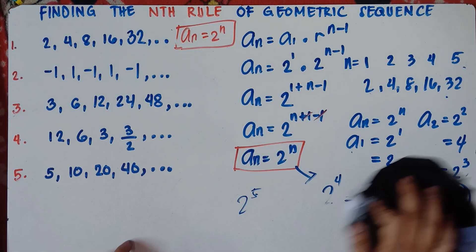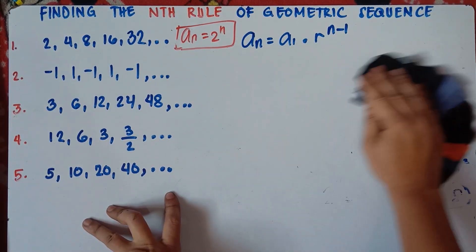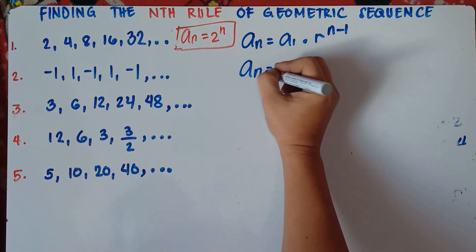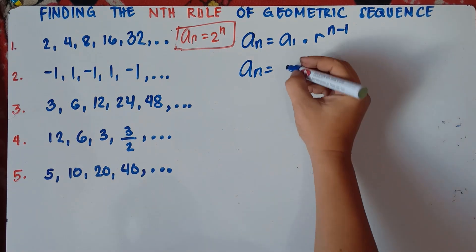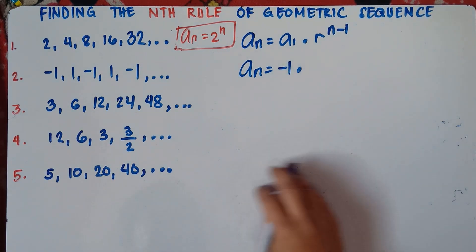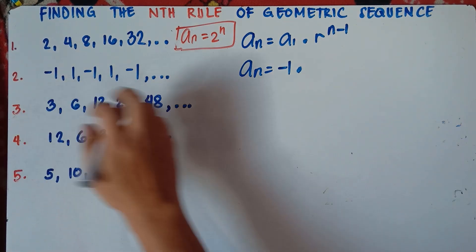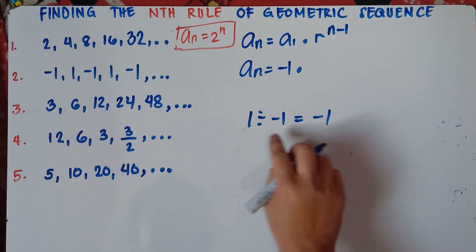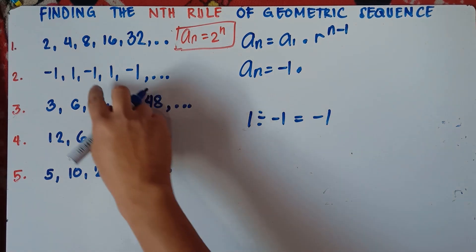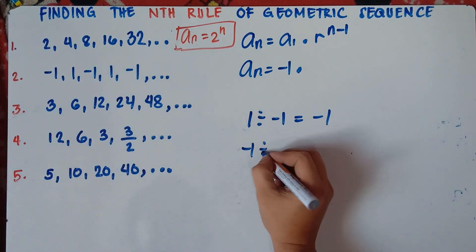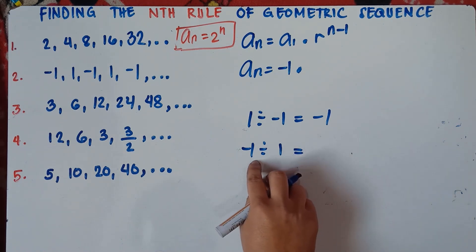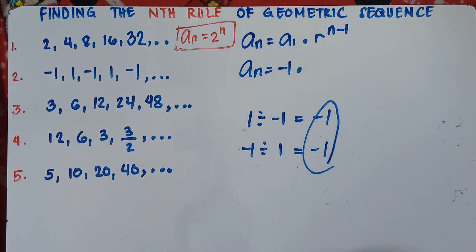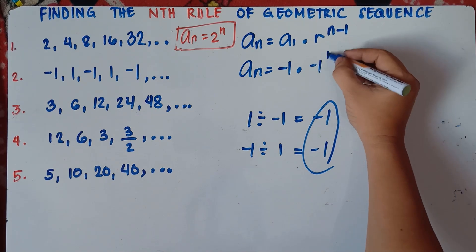Okay let's try number 2. Once again, we use the equation. So a sub n equals — the first term is negative 1 — negative 1 times the common ratio. Divide the second term by the first term: 1 divided by negative 1. Positive divided by negative is negative, so negative 1. Third term divided by the second term: negative 1 divided by 1 is negative 1. Therefore the common ratio is negative 1. So negative 1 raised to the power of n minus 1.